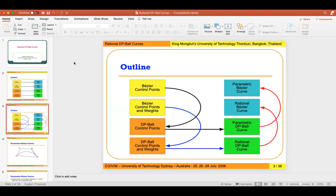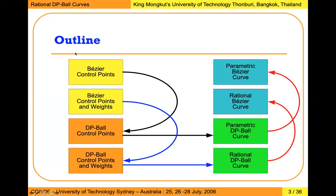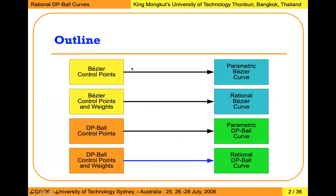You have seen this presentation already. This is the case for the rational DP curve. If you want to calculate for a point on the Bezier curve — the original Bezier curve — you can use the P curve instead. Previously I've talked about Said Ball and Wang Ball.